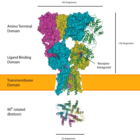AMPARs open and close quickly — on the order of one millisecond — and are thus responsible for most of the fast excitatory synaptic transmission in the central nervous system. The AMPAR's permeability to calcium and other cations, such as sodium and potassium, is governed by the GLUA-2 subunit. If an AMPAR lacks a GLUA-2 subunit, then it will be permeable to sodium, potassium, and calcium. The presence of a GLUA-2 subunit will almost always render the channel impermeable to calcium. This is determined by post-transcriptional modification — RNA editing — of the Q-to-R editing site of the GLUA-2 mRNA.